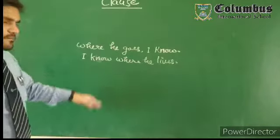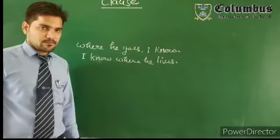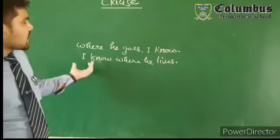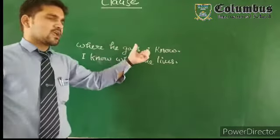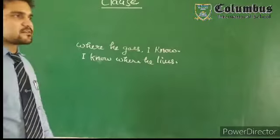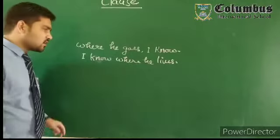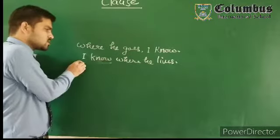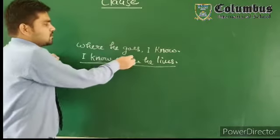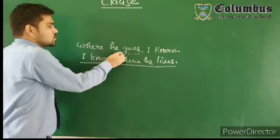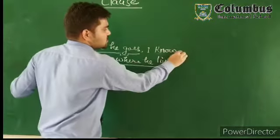I have written two different statements in which you have to identify the clause. Now you can see that 'I know where he lives' is a complete sentence, and 'where he goes, I know' is also a complete sentence. We will just separate the parts of these sentences — 'I know' is being separated from 'where he lives,' and 'where he goes' is being separated from 'I know.'